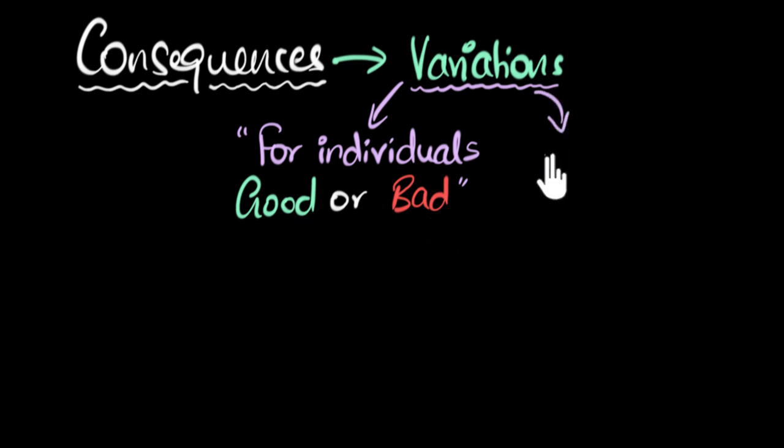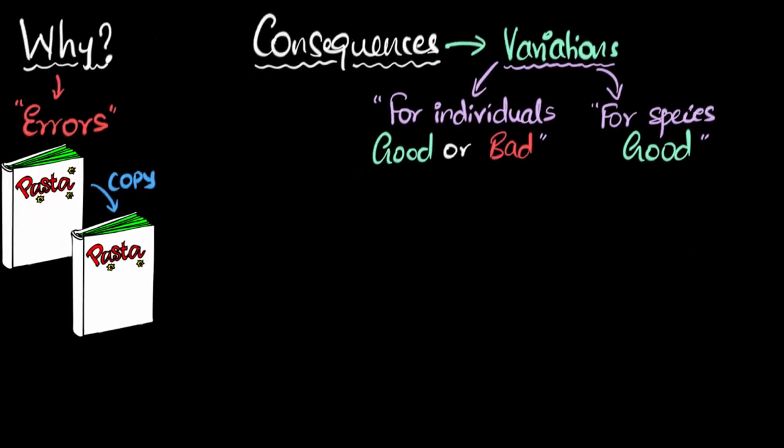But, for the species, if you're looking for the species as a whole, variations are definitely good. In fact, I'll go ahead and say that if you want a species to survive over a long period of time, maybe millions of years, you need to have variations. Variations is the key for the species to survive. Now why am I saying that? Well, let me take an example to make this clear.